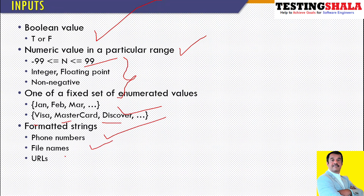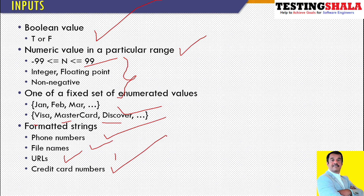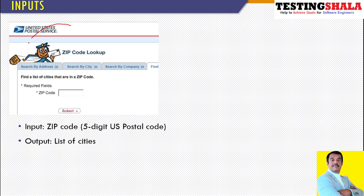Formatting strings also represent a category of inputs. Phone numbers come with a certain format, file names come with a particular format, URLs come in a particular format, and credit card numbers also come in a particular string format. All these different inputs can be given to the application in different formats.